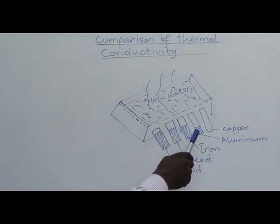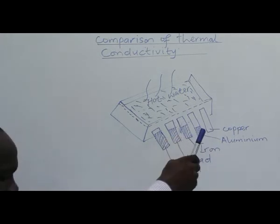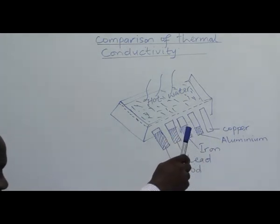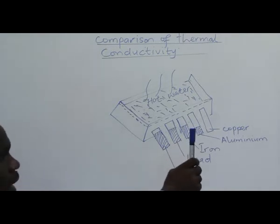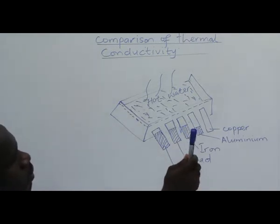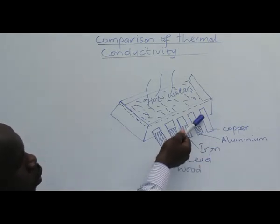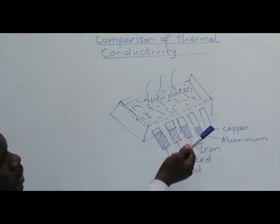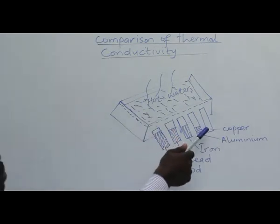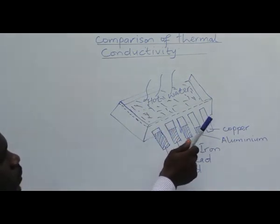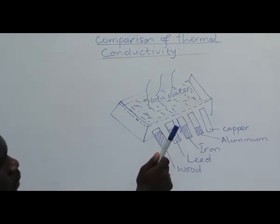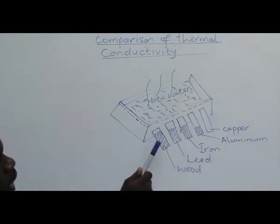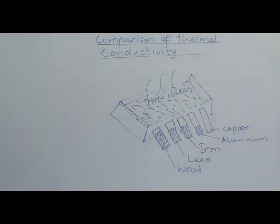The wax on the rods is observed to start melting from the heated end. After some time, the copper rod shows the longest length of melted wax, while the wooden rod hardly melts at all. This verifies that copper is the best conductor of heat, followed by aluminum, then iron, then lead, while wood is a very poor conductor of heat.